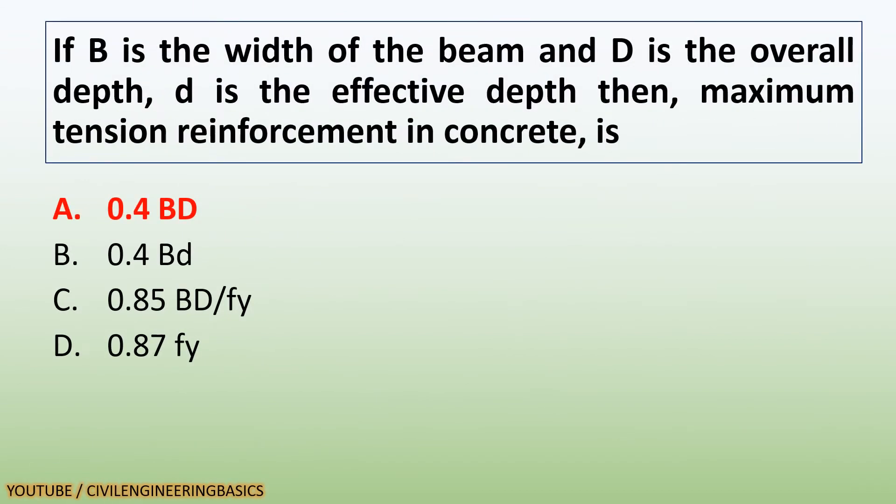If B is the width of the beam and D is the overall depth, d is the effective depth, then maximum tension reinforcement in concrete is 0.04 BD.